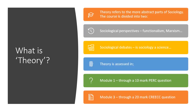Theory refers to the more abstract parts of sociology. The course is divided into two parts. Firstly, sociological perspectives — that's your functionalism, Marxism, postmodernism, etc. And secondly, sociological debates — so, is sociology a science, and should sociologists try to be objective or value free? Theory is assessed in Module 1 for a 10-mark question and Module 3 for a 20-mark question.